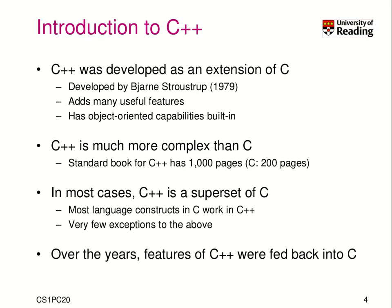C++ is much more complicated than C. If you look at a standard book for C++, you're looking at 1,000 pages. When you compare it to the standard of C, it has about 200 pages. That's a huge difference, and that's one of the reasons why we introduce C++ later than C.